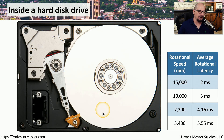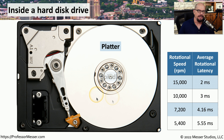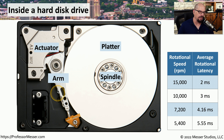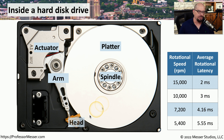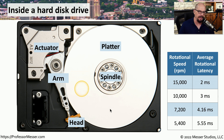Here's the view inside of a hard drive. All of the data is stored on these platters that are spinning at very high rates of speed. The platter rotates around a spindle in the middle, and an actuator on the hard drive controls an arm that moves back and forth over these platters to store or retrieve data. There's a small head at the end of the arm that is used to very precisely locate, retrieve, and write data to these spinning platters.